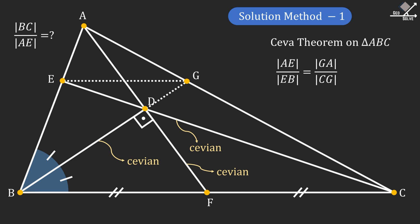And this implies that line segment EG is parallel to line segment BC. From here we can see that angle EGB is equal to angle GBF.